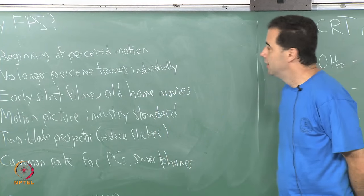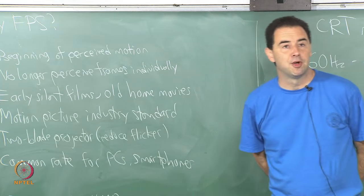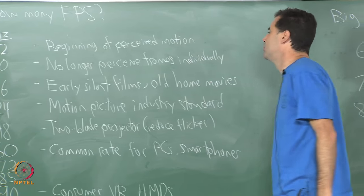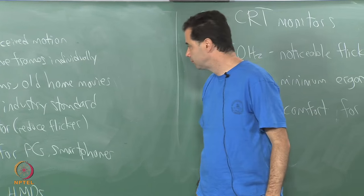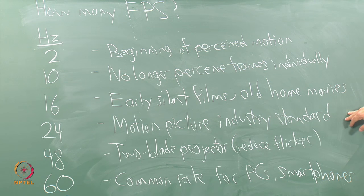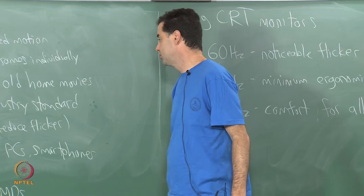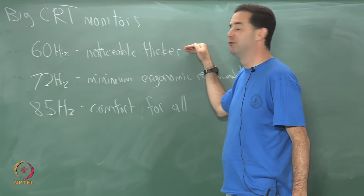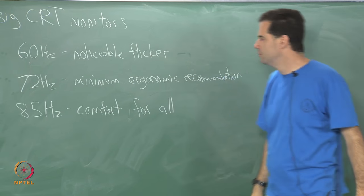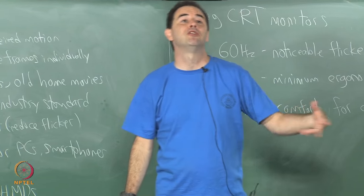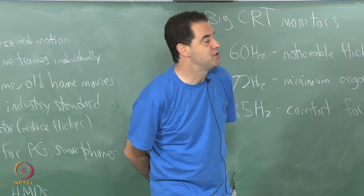Welcome back. In the previous lecture we were talking about perception of motion and we looked at various frame rates, all the way down to as low as 2 hertz where you have the beginning of perceived motion — this is stroboscopic apparent motion. We get up to 16, 24 frames per second — the motion picture industry standard. Old CRT-based television signals were on 25 or 30 hertz, and eventually CRT monitors developed noticeable flicker as monitors got larger and people sat close to them, because of flicker perceived in the peripheral vision.